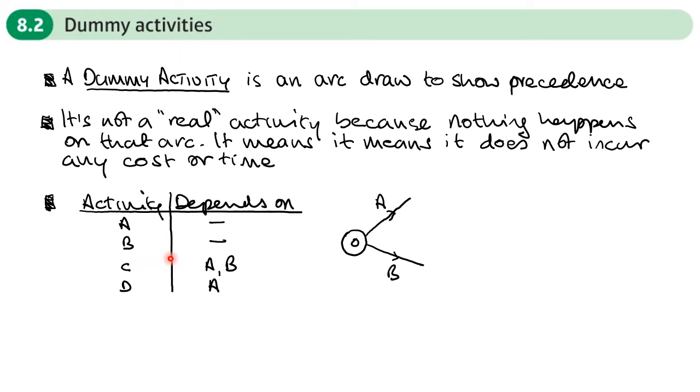Then we've got activity C which is dependent on A and B. So let's put that in, see what happens. So this is number one and actually we'll draw that slightly differently. Okay so redrawn it so that they can both go into this node here and then we get to activity C but then we get to a problem.